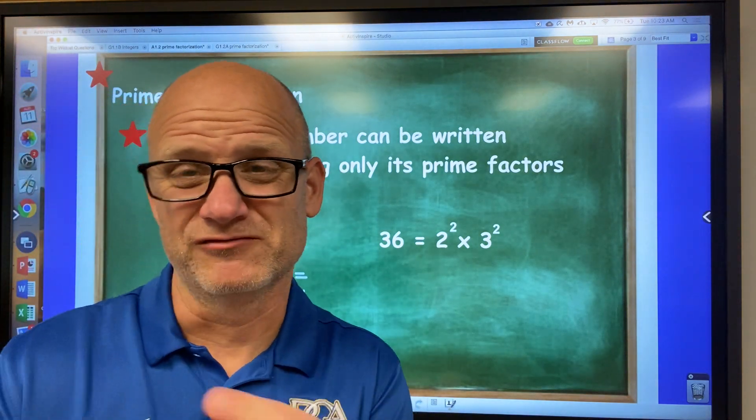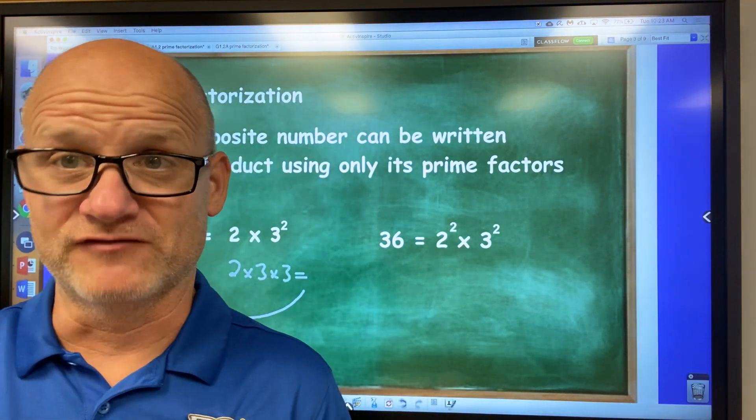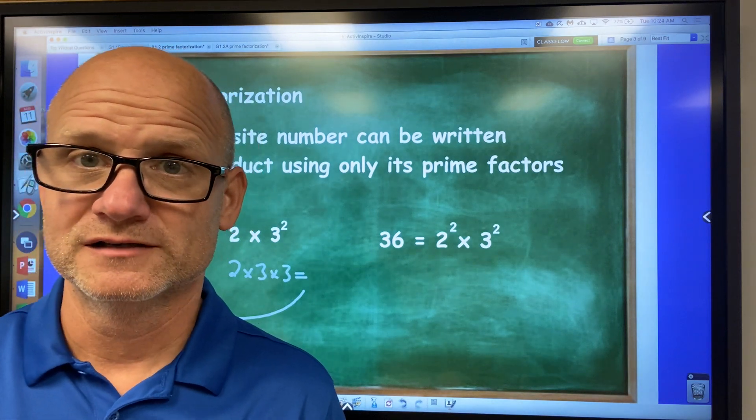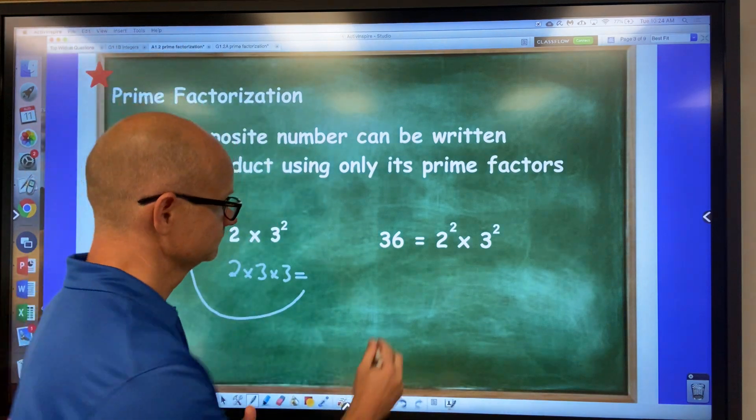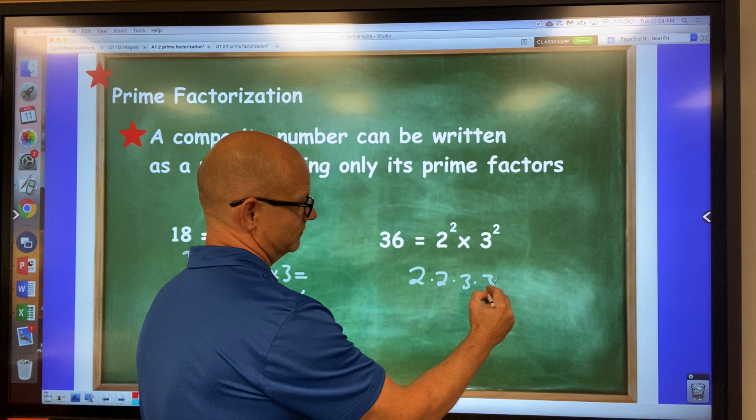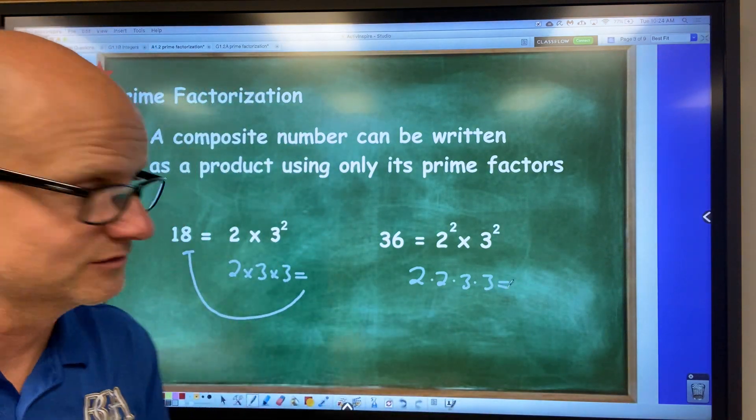You keep factoring and factoring the number until you have all prime numbers. Again, like 36. If we factored 36 to all prime numbers, we would get two to the second power times three to the second power, or two times two times three times three. What does that equal? Well, that's nine times four, 36. Prime factorization.